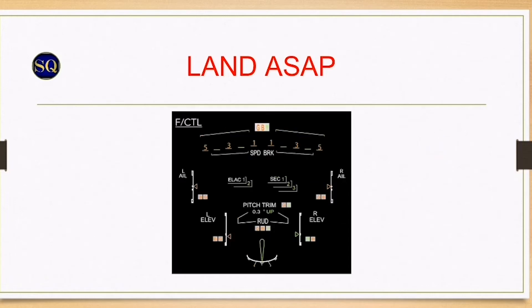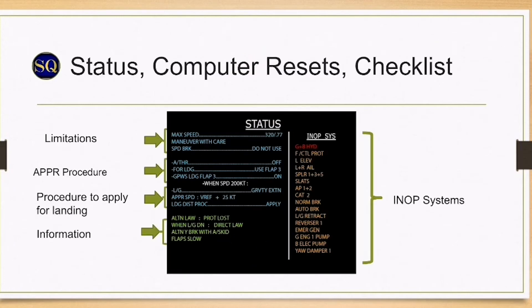Review the wheel page, take note of the items in amber. Review the flight control page. Any extended spoilers will result in increased fuel consumption. Status computer resets and checklists. Pilot monitoring reads the status starting at the top left hand side: limitations, approach procedure, landing procedure, and information, then reads the inoperative systems. Some fun fact: older aircraft use the green system for nose wheel steering and newer aircraft use the yellow system.